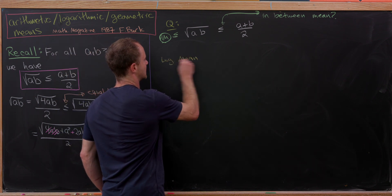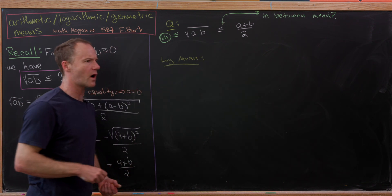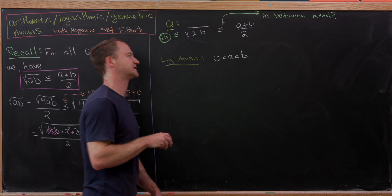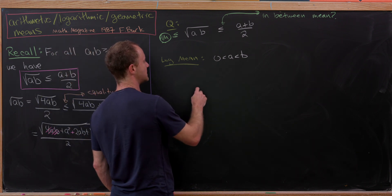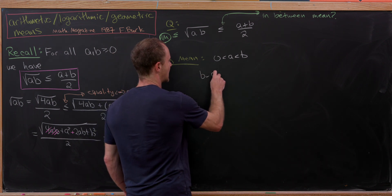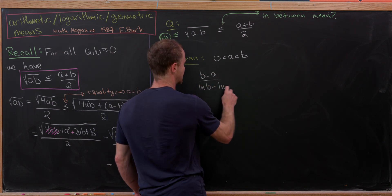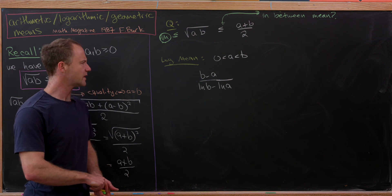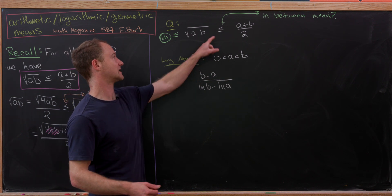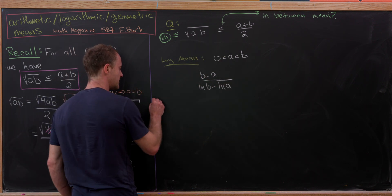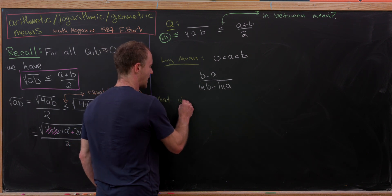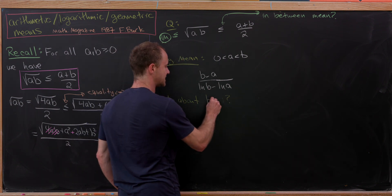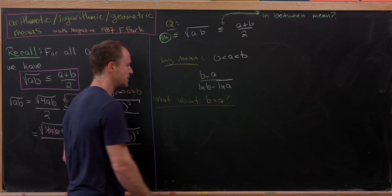I'll call it the log mean for short. It requires a and b to be positive, and we'll take a to be less than b for simplicity. The logarithmic mean is defined as b minus a over the natural log of b minus the natural log of a. Now, the case when b equals a clearly doesn't make sense by this definition.